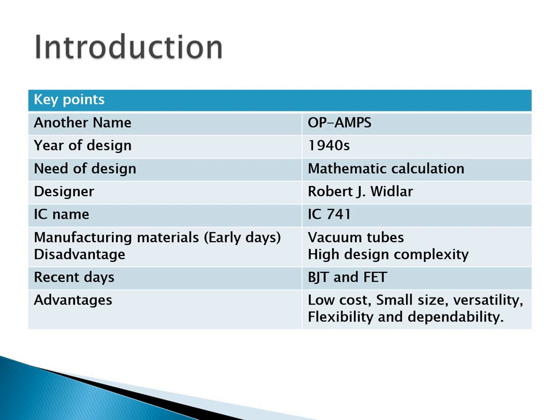First, an introduction to operational amplifiers. The operational amplifier, most commonly referred to as op amp, was introduced in the 1940s. The first operational amplifier was designed in 1948 using vacuum tubes. In those days, it was used in analog computers to perform a variety of mathematical operations, such as addition, subtraction, multiplication, and so on. Due to its use in performing mathematical operations, it has been given the name operational amplifier.